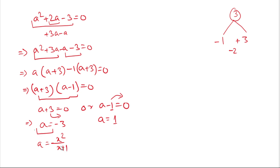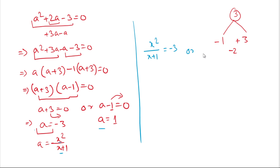We put x²/(x+1) back in place of a. So we have two cases: x²/(x+1) = −3, or x²/(x+1) = 1. We solve each case separately.